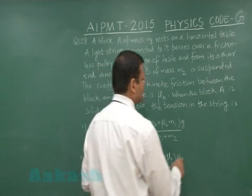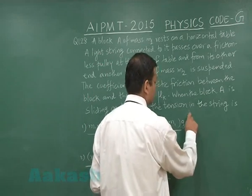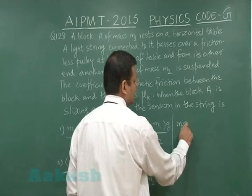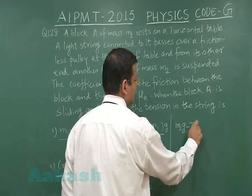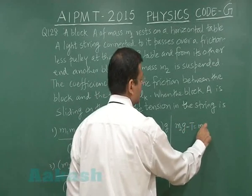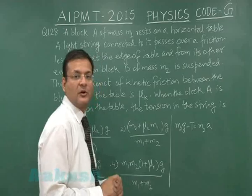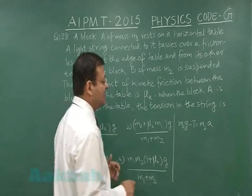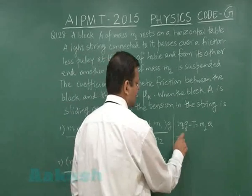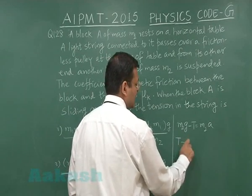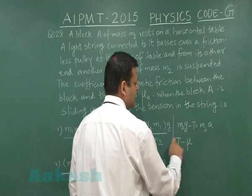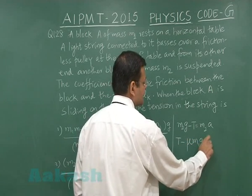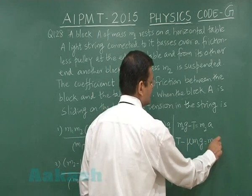For mass M2, the equation is M2G minus T equals M2A. This is the equation for the hanging mass M2. For the mass on the table, we write T minus mu·M1G equals M1A.